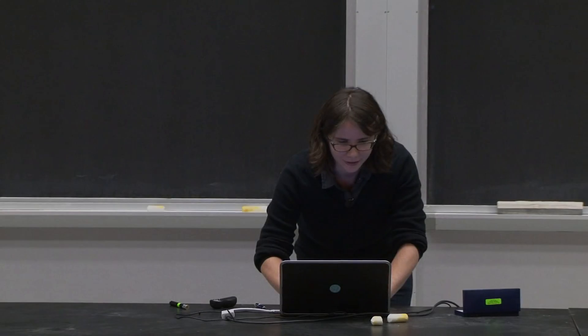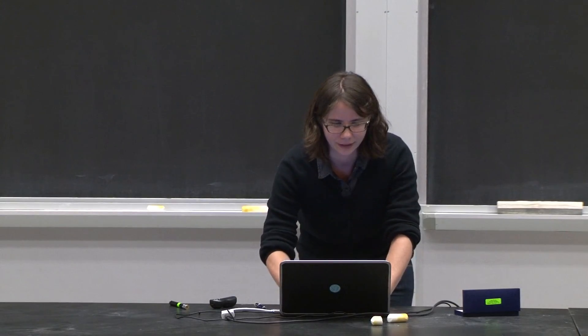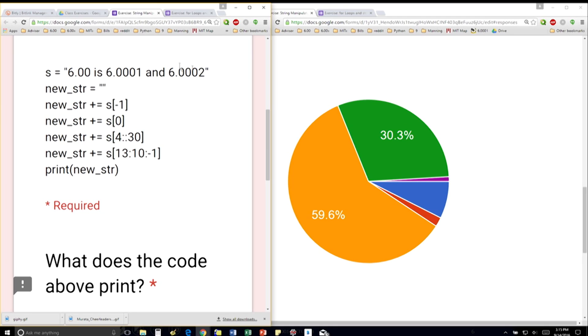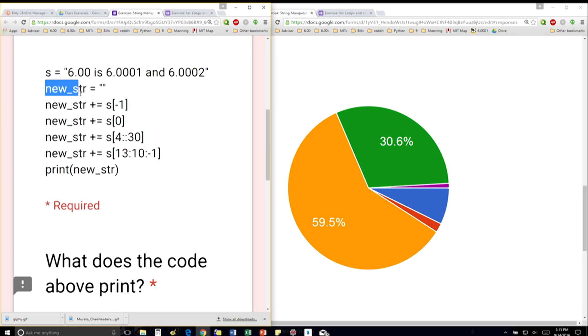So the question is, we have the string s. This is the string 6.00 is 6.0001 and 6.0002. So we're going to create this string here. It's initially an empty string.